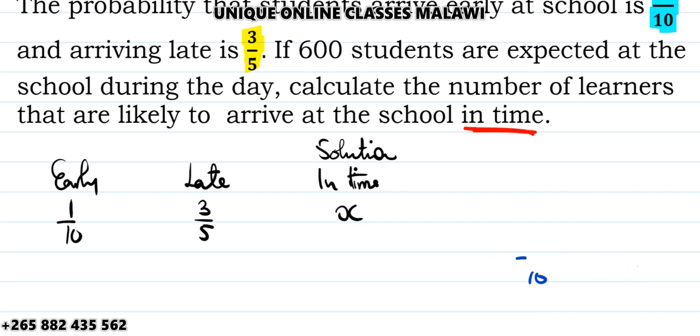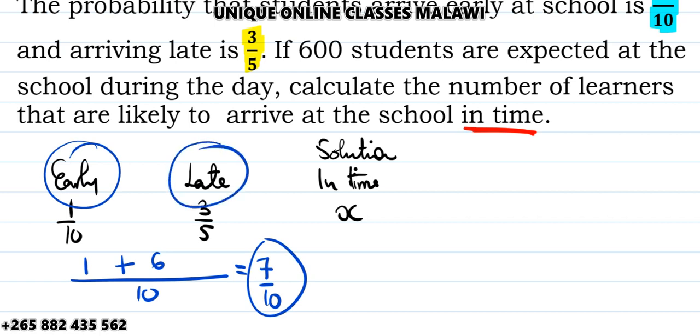If you want to find early or late, just add the probabilities given. Common denominator is 10. 1 times 1 is 1. 10 divided by 5 is 2, times 3 is 6. If you add these, you get 7 over 10. 7 over 10 is the probability of students arriving early or late.